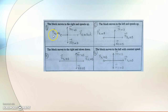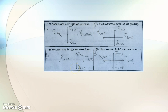To answer this question: the block moving to the right and speeding up, and the block moving to the left and speeding up — both have net work greater than zero and velocity increasing. The block moving to the right and slowing down has net work less than zero and velocity decreasing. The block moving to the left with constant speed has net work equal to zero and velocity constant.